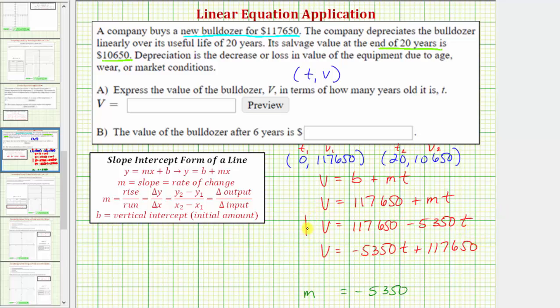Let's go ahead and enter this equation here. We already have V equals, so we enter 117,650 minus 5,350T.